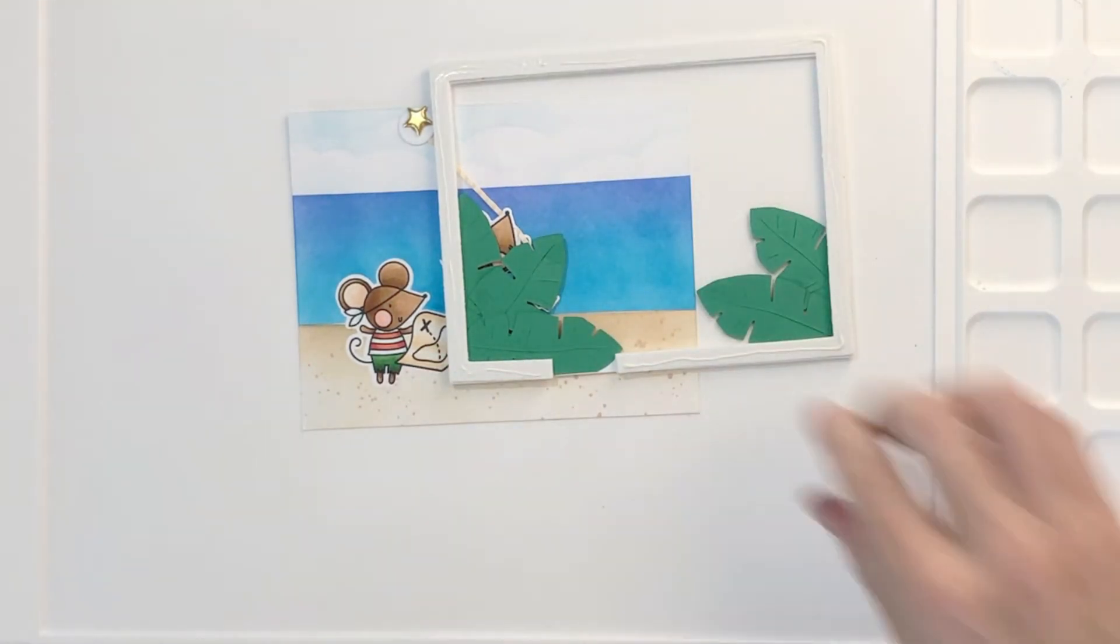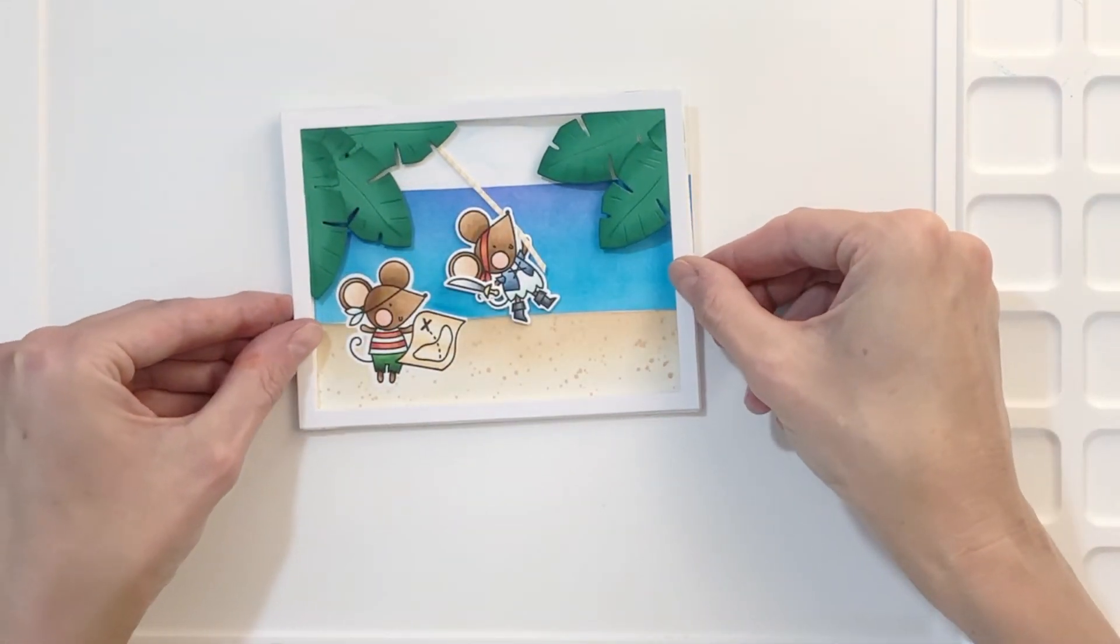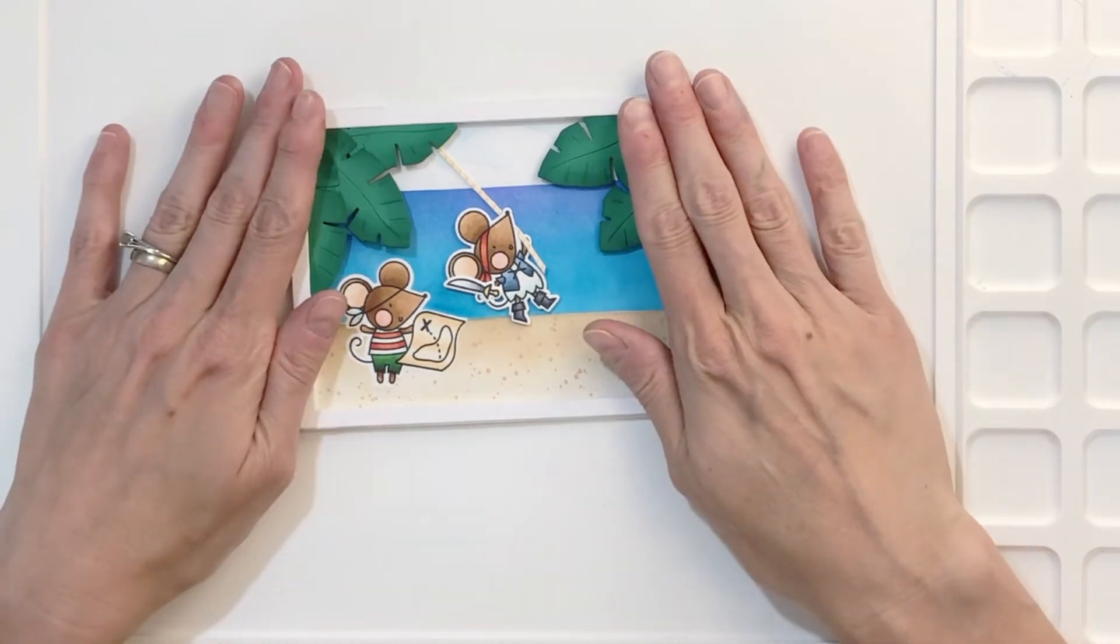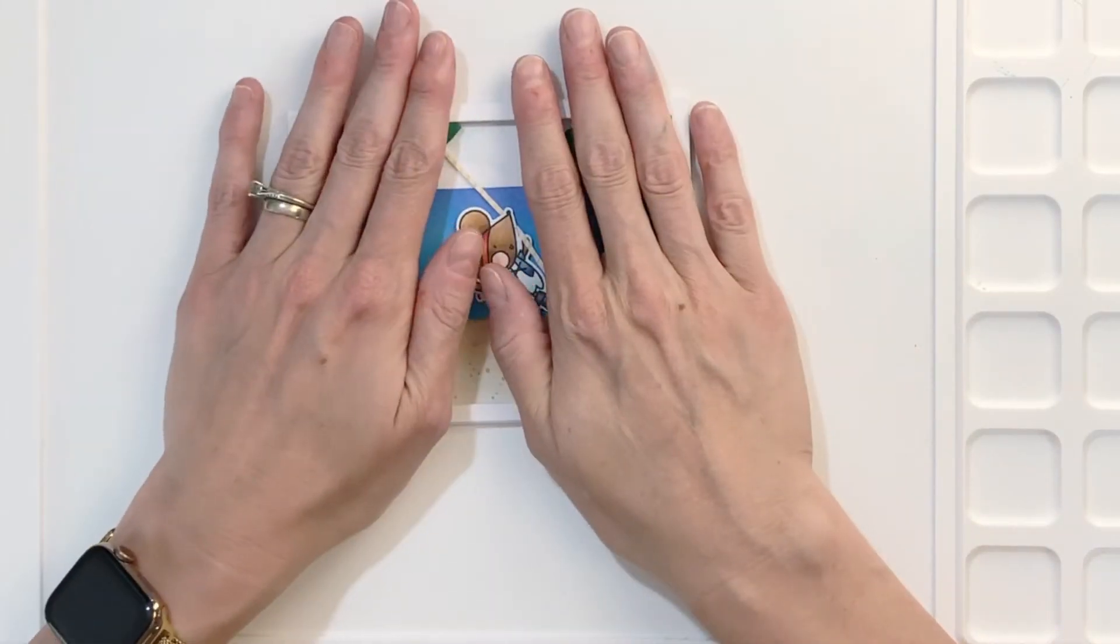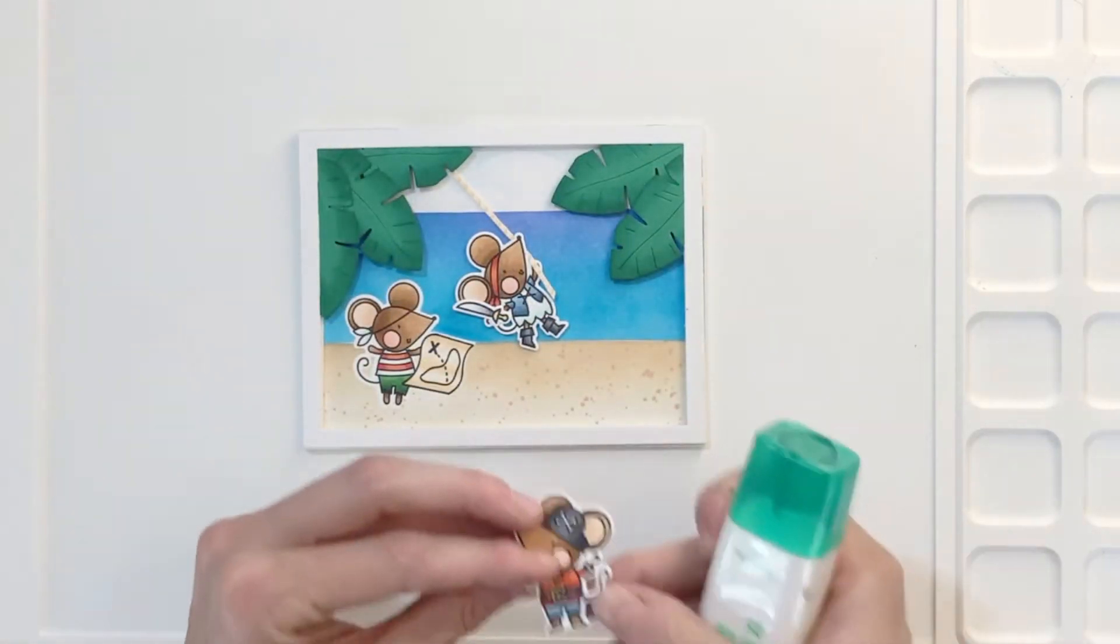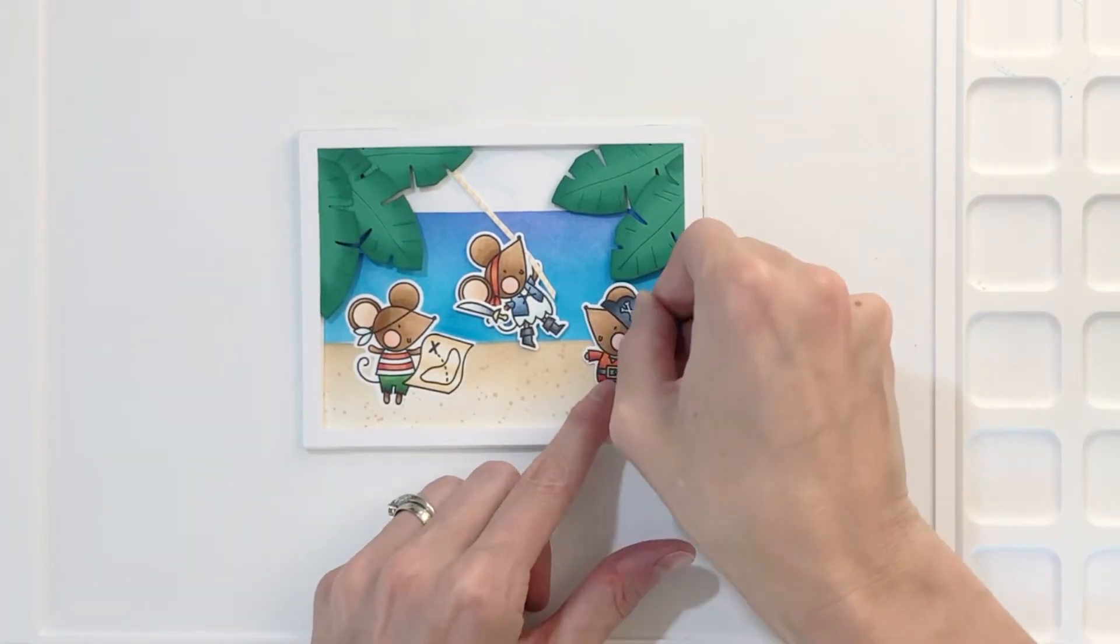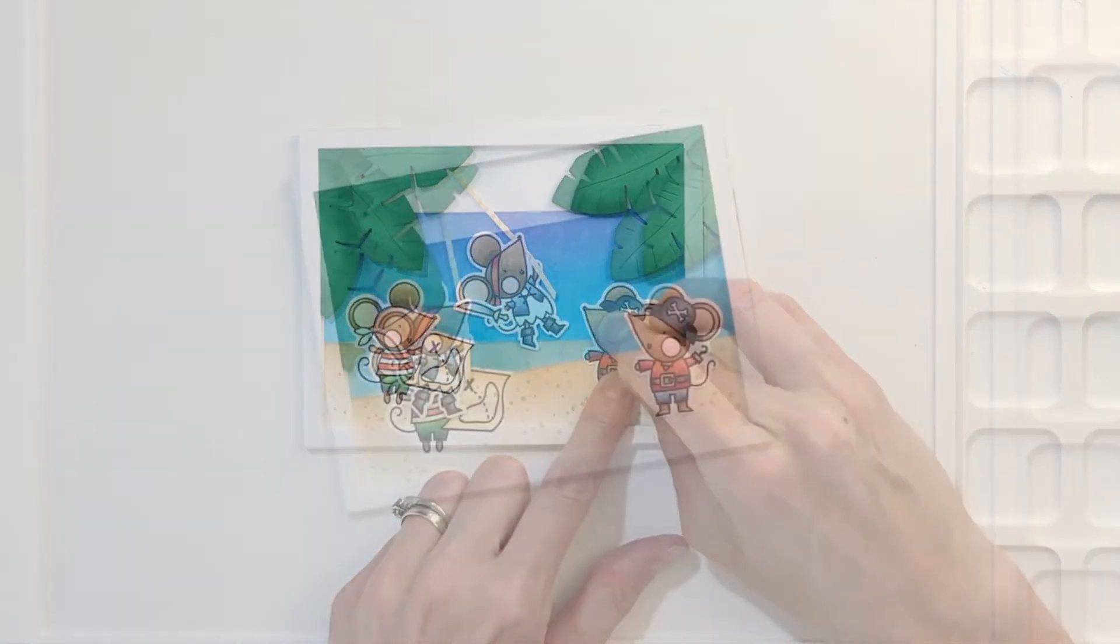So again, I'm using my liquid adhesive here, adding some glue and then flipping this over and just lining up the edges here. And as you can see, that leaf covers up that brad so it's really well hidden with those leaves.